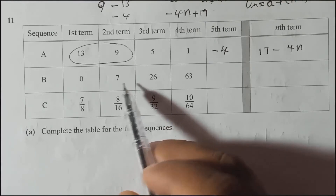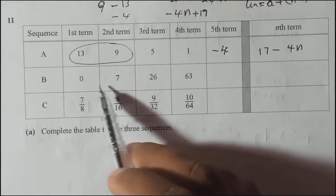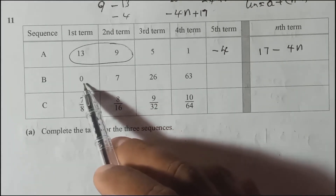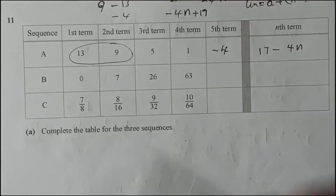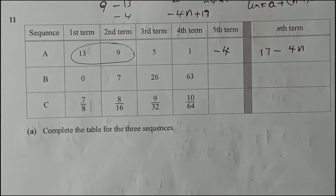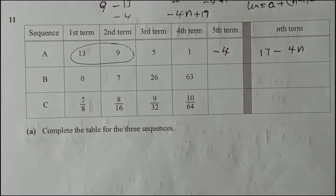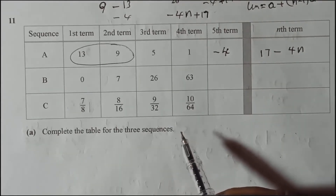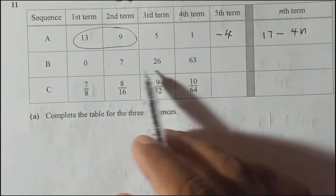Now we need to find the nth term for sequence B. When you look very carefully, check — this does not look like an arithmetic sequence or a geometric sequence. You can see there is no common difference: 0 to 7 is 7, and 7 to 26 is 19 — different. So this is not arithmetic or geometric; maybe it is a quadratic or cubic sequence.